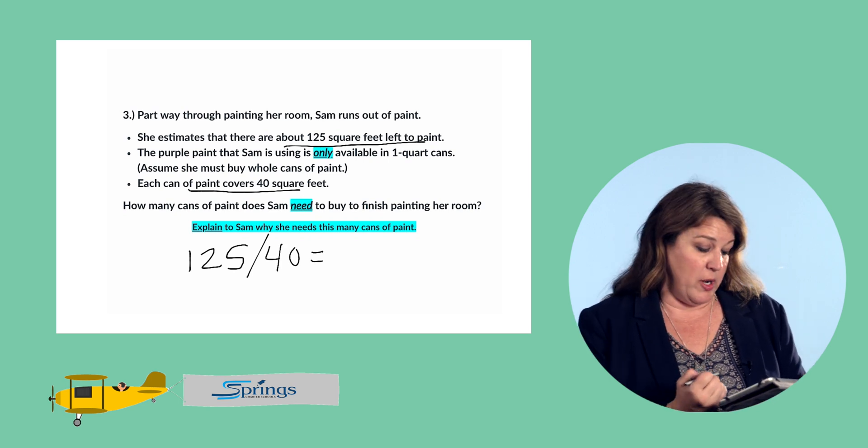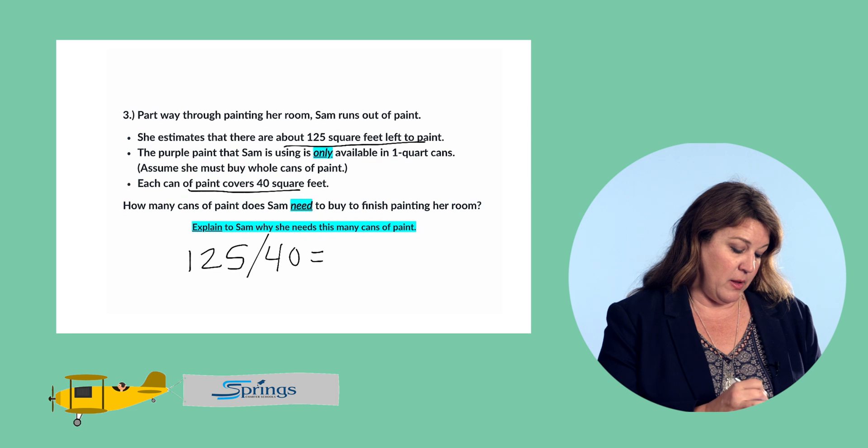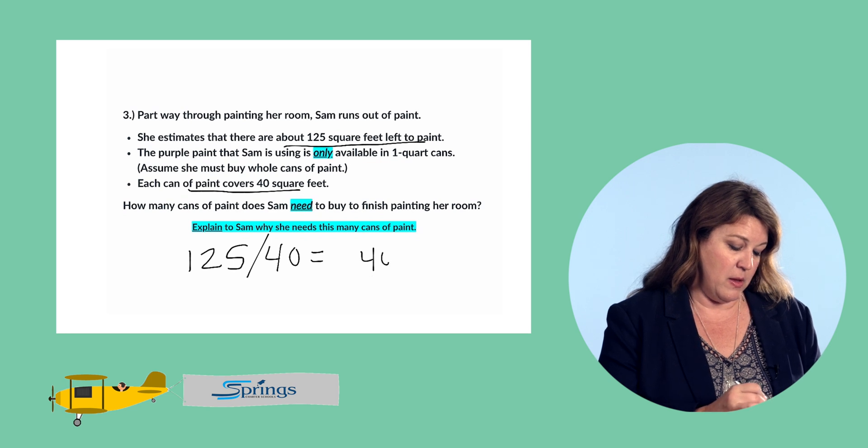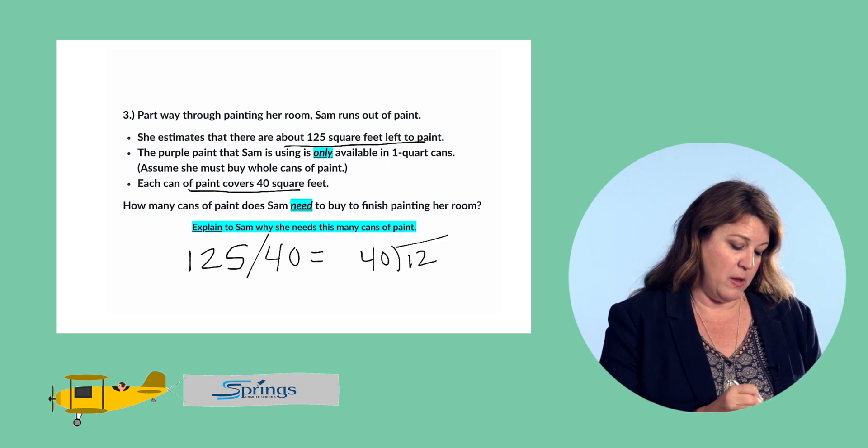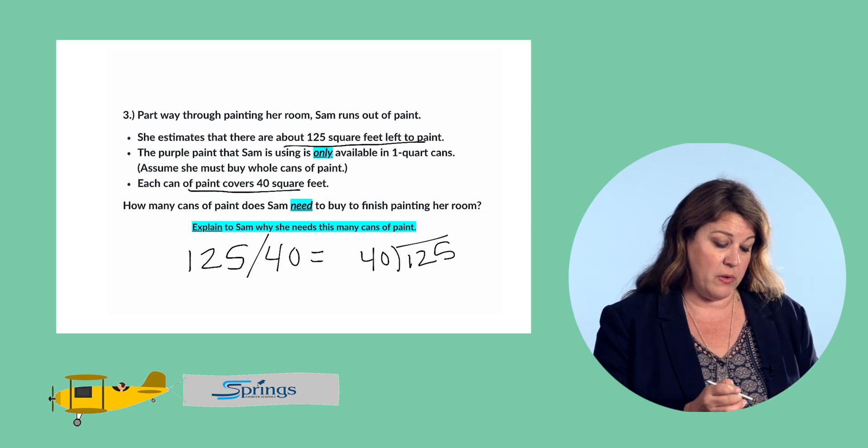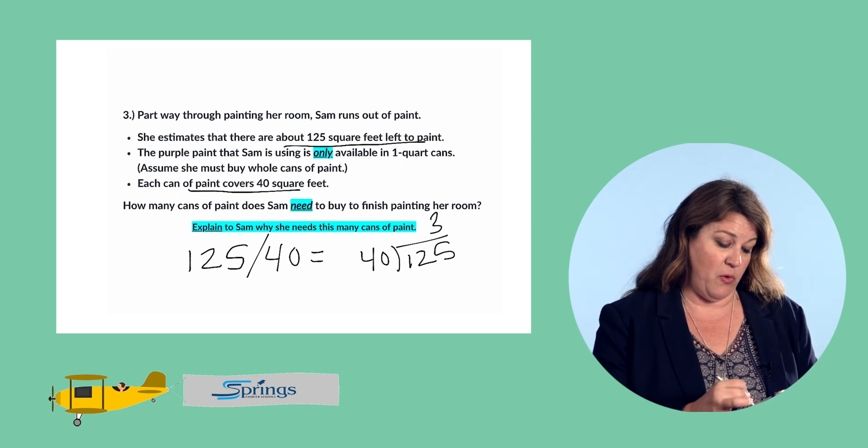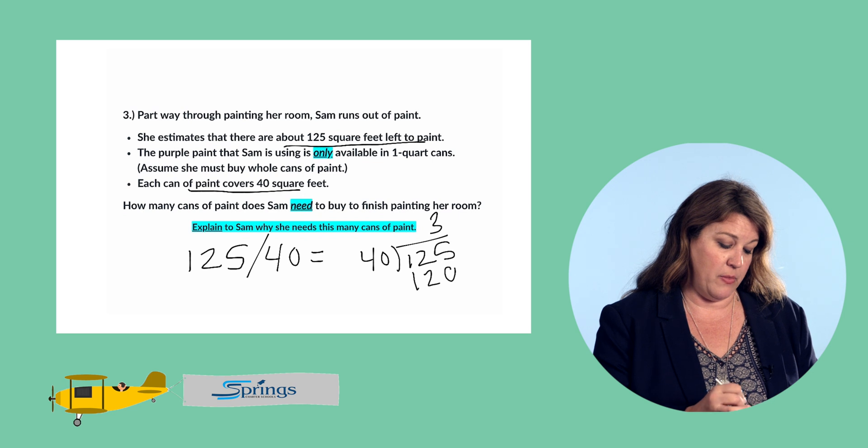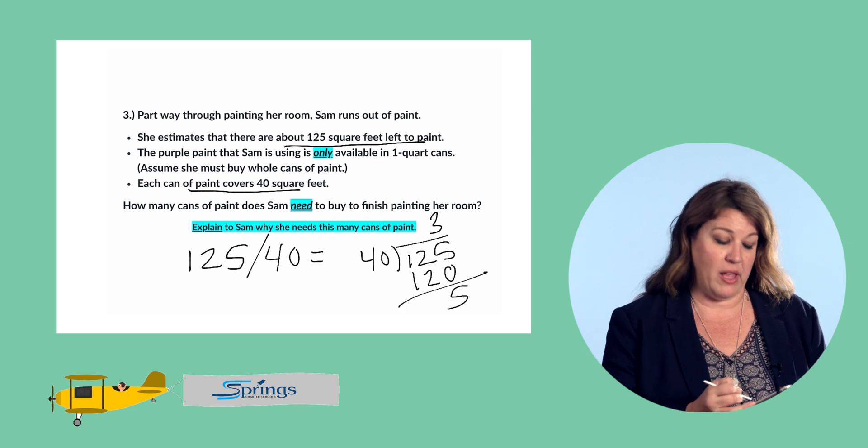So, 125 divided by 40. 40 goes into 125 three times. Three times 40 is 120, with five left over.